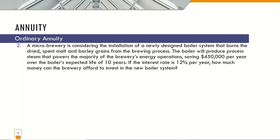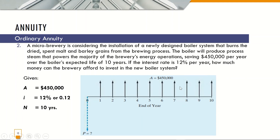The next example: A microbrewery is considering the installation of a newly designed boiler system that burns the dried spent malt and barley grains from the brewing process. The boiler will produce process steam that powers the majority of the brewery's energy operation, saving $450,000 per year over the boiler's expected life of 10 years. If the interest rate is 12% per year, how much money can the brewery afford to invest in the new boiler system? We are asked for P, the present value, given A equal to $450,000 as the annuity amount. The cash flow diagram shows $450,000 per year for 10 years, and we must find the present value P.